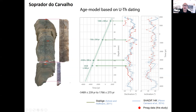We can see that there is some mismatch between the magnetic data and the model, suggesting that either the magnetic data are wrong, or there is some error related to the data. This is also partly due to the fact that when constructing the age model, we assume that growth rates are constant, which is actually not the case.